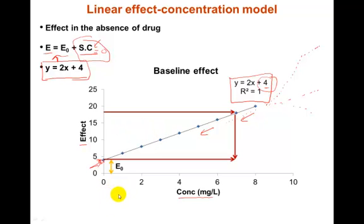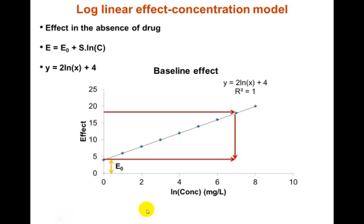Right now we have concentration from 0 to 10. But what if we have concentrations in the range of hundreds or thousands — like 10, 100, 1000? In that case, we simply convert our data into natural log and plot those concentrations in the form of natural log, as I'm showing.